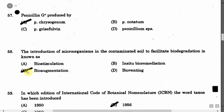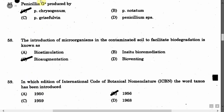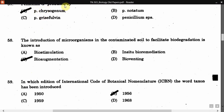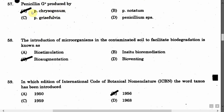The next question is: Penicillin G is produced by — Option A: Penicillium chrysogenum. Option B: Penicillium notatum. Option C: Penicillium griseofulvum. Option D: Penicillium species. The correct answer is Option A, that is Penicillium chrysogenum.